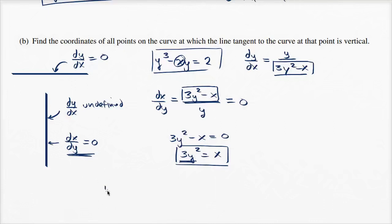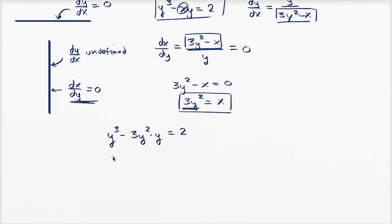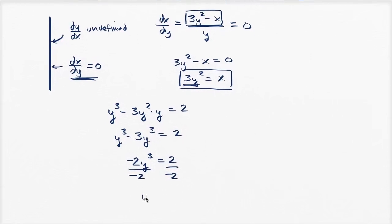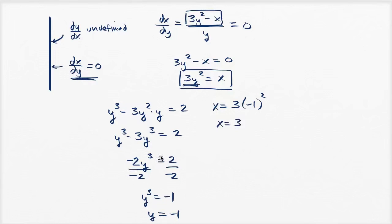Taking the original equation y³ − xy = 2 and substituting x = 3y², we get y³ − 3y² · y = 2, which simplifies to y³ − 3y³ = 2, so −2y³ = 2. Dividing both sides by −2 gives y³ = −1, or y = −1. If y = −1, then x = 3(−1)² = 3(1) = 3. So the point on the curve at which the tangent line is vertical is (3, −1).